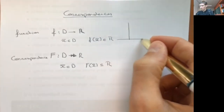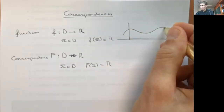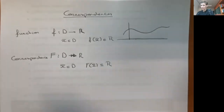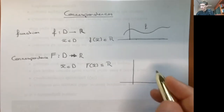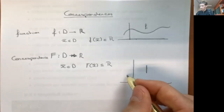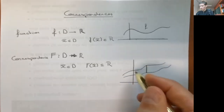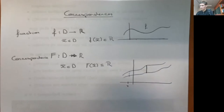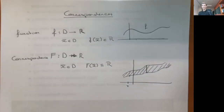In general, if we depict functions, the domain is on the x-axis and for every x in the domain we have a unique value of the function. For a correspondence, on the other hand, for every x you can have multiple values in the range — this can be an entire subset. So in particular, for any x here we have multiple values in the range, and the correspondence could be an entire region in two-dimensional space.